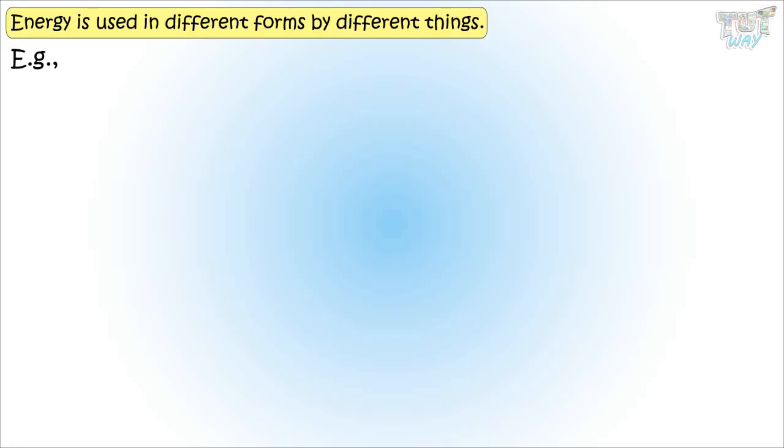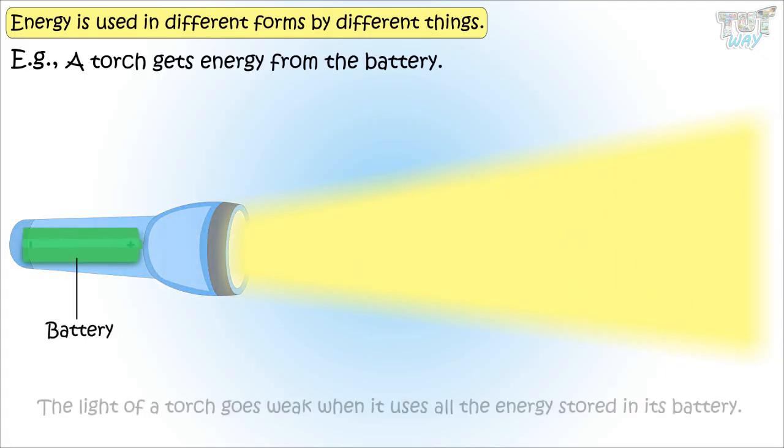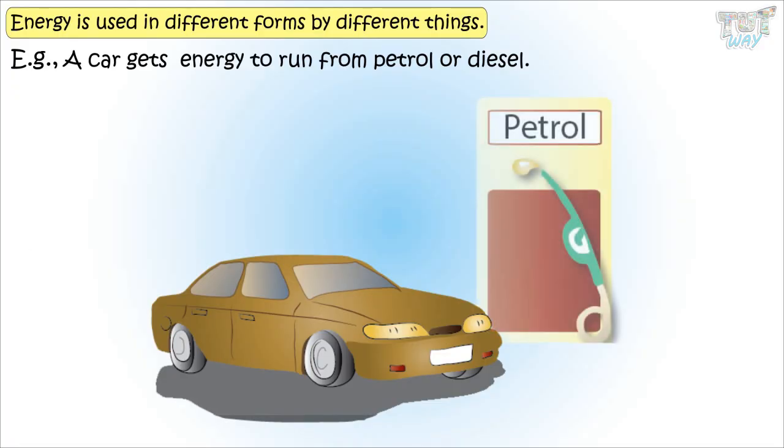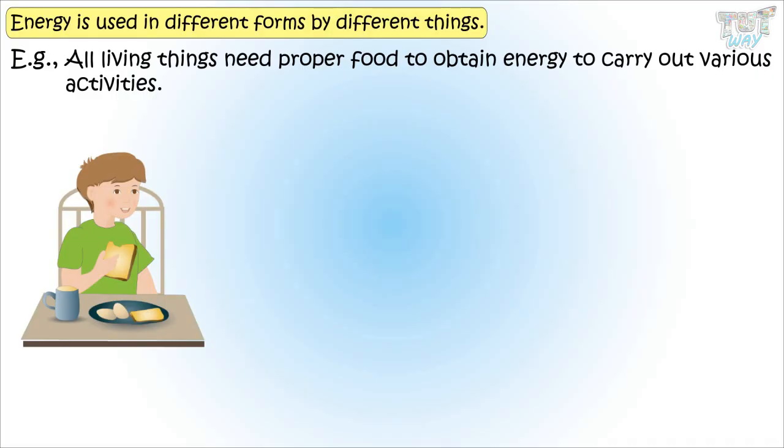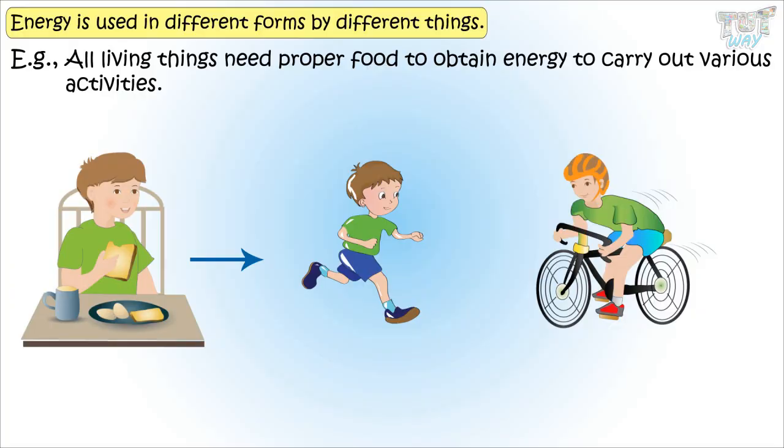Energy is used in different ways and in different forms by different things. Let's see some examples. A torch gets energy from the battery. Why the light of a torch goes weak when it uses all the energy stored in its battery? A car gets energy to run from petrol or diesel. A car has to be filled with petrol if it has to run.